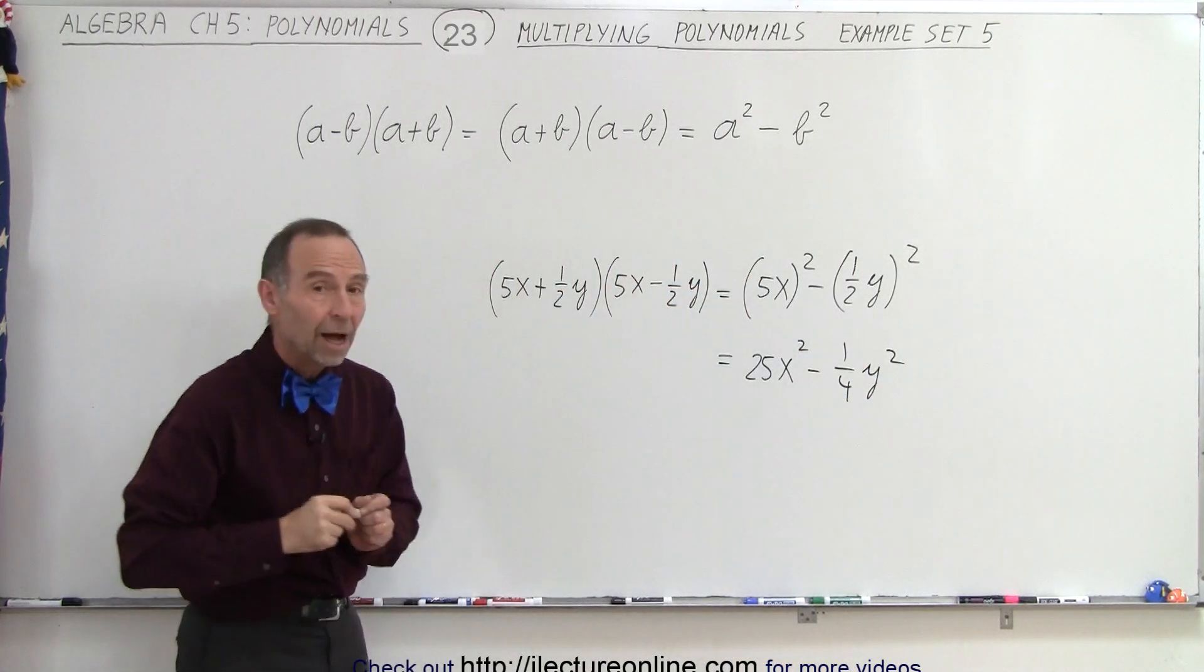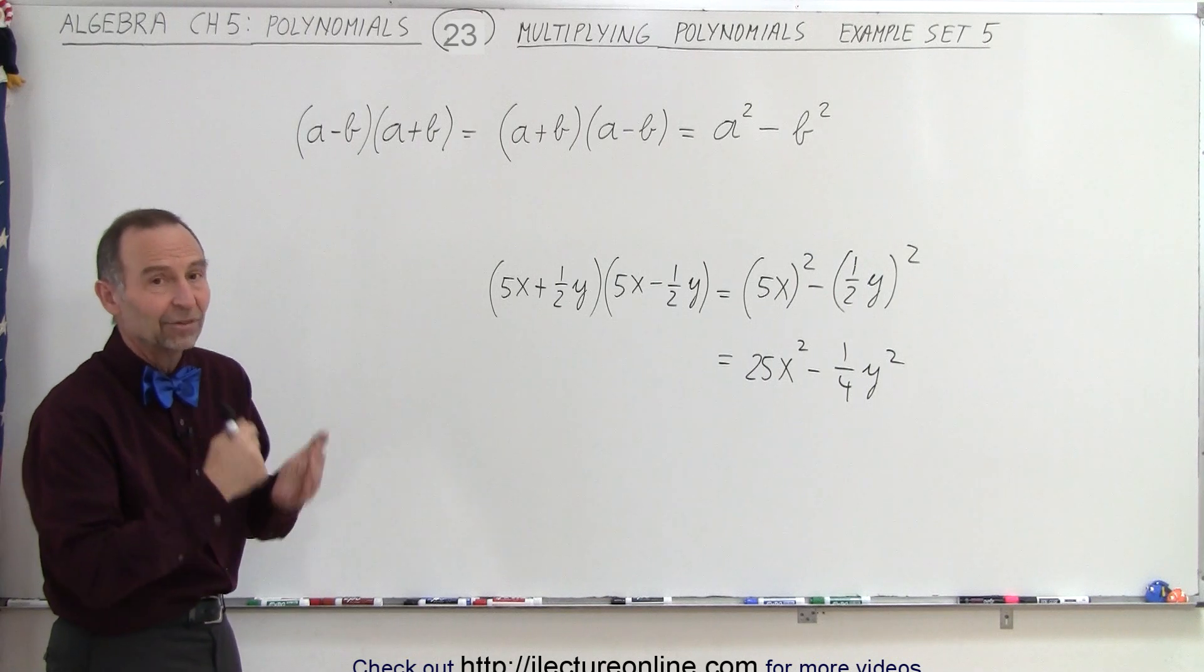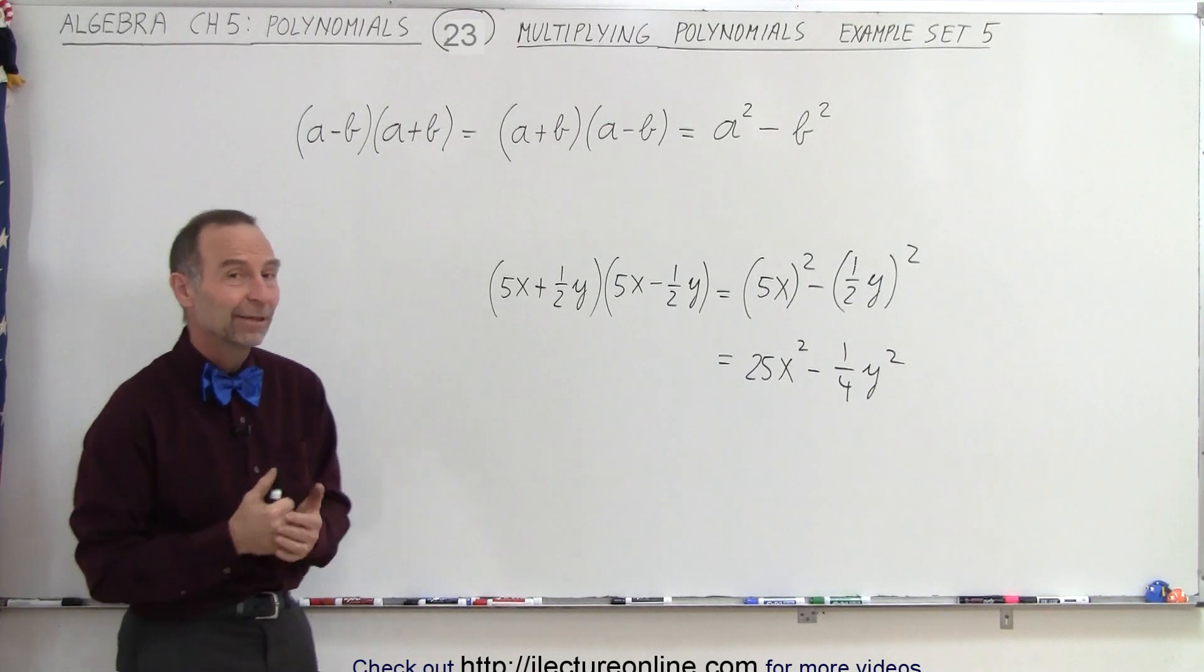And that's how you deal with that common way of multiplying two binomials when they're exactly the same, except for the sign in the middle. And that is how it's done.